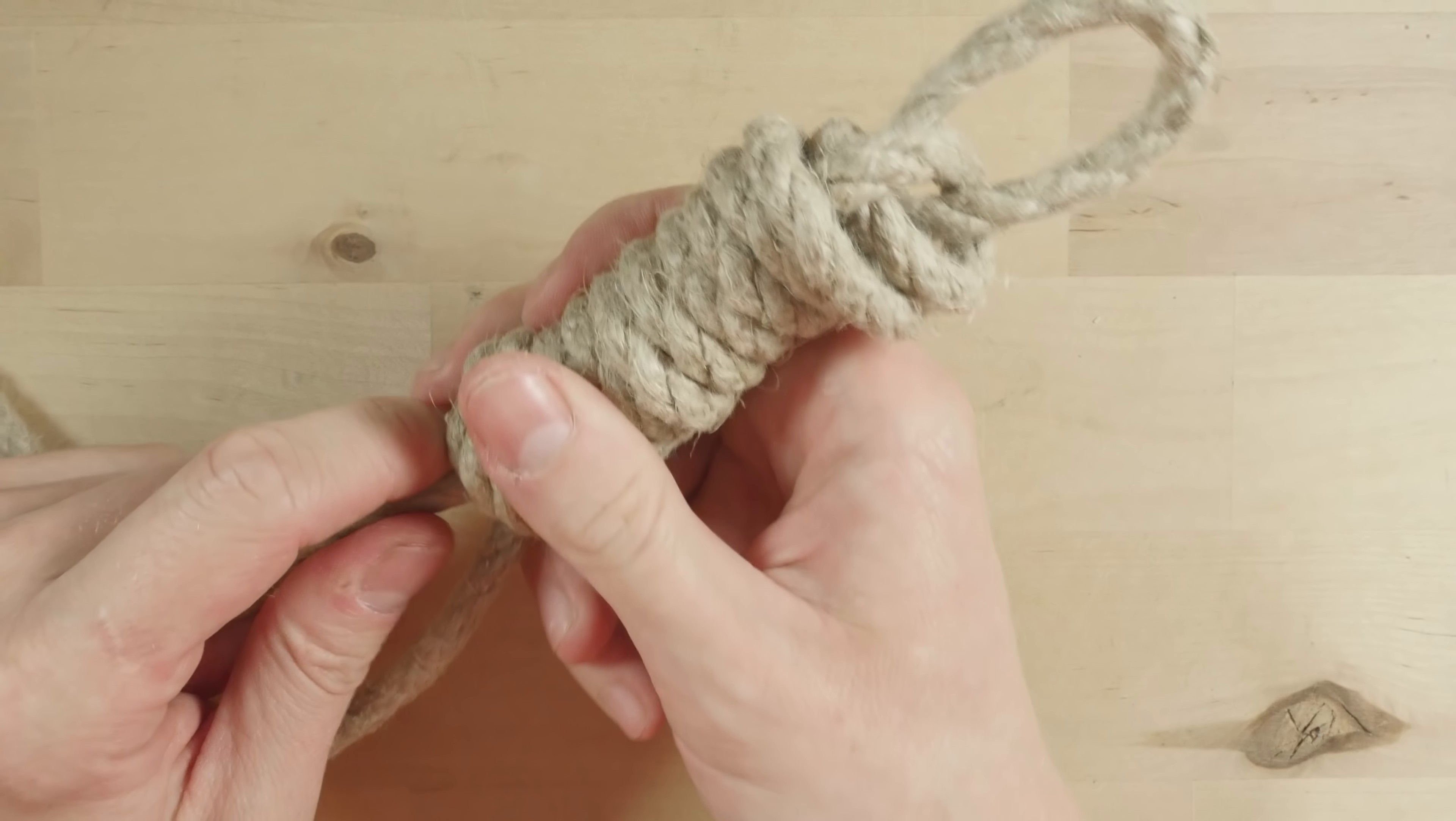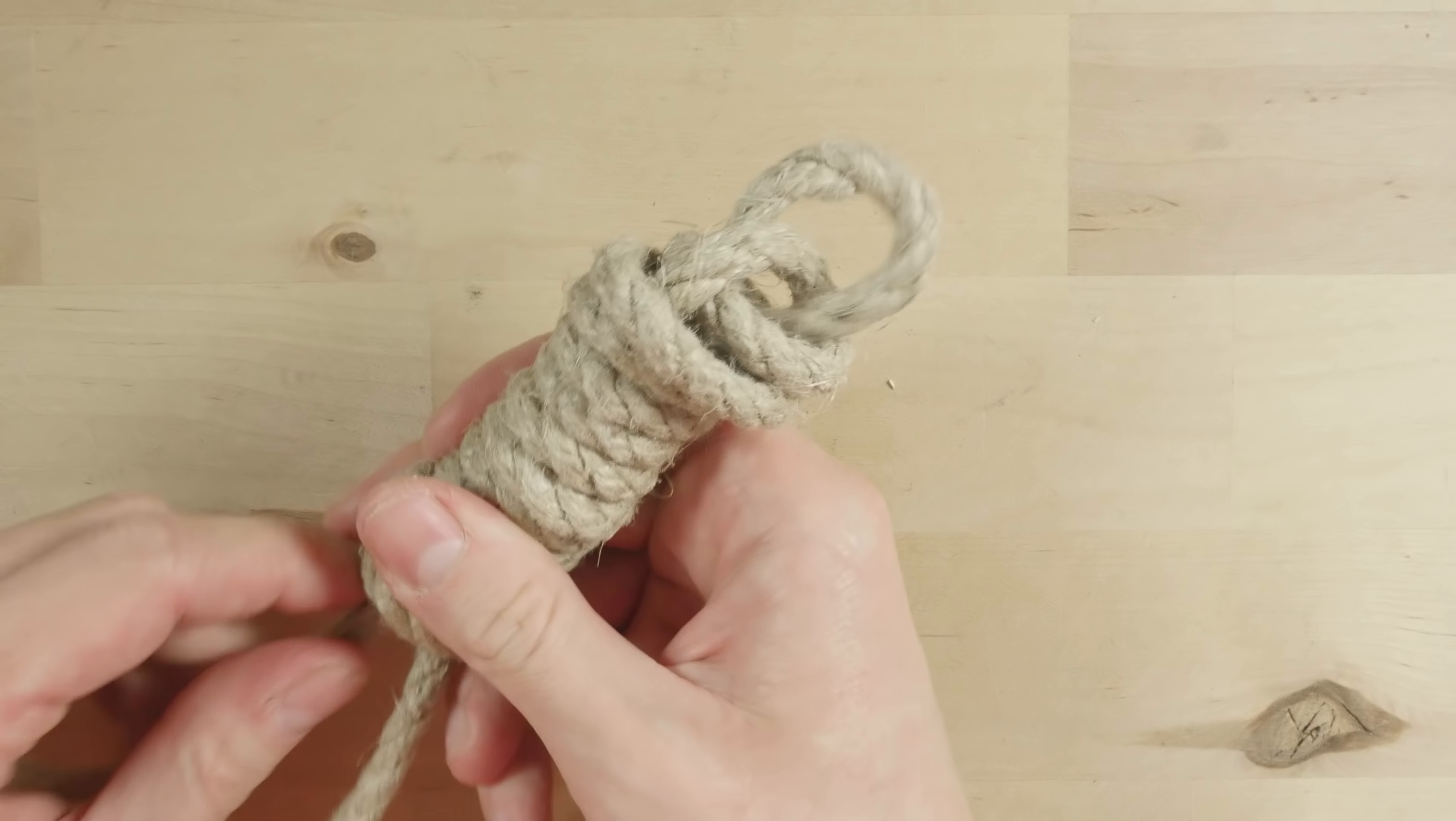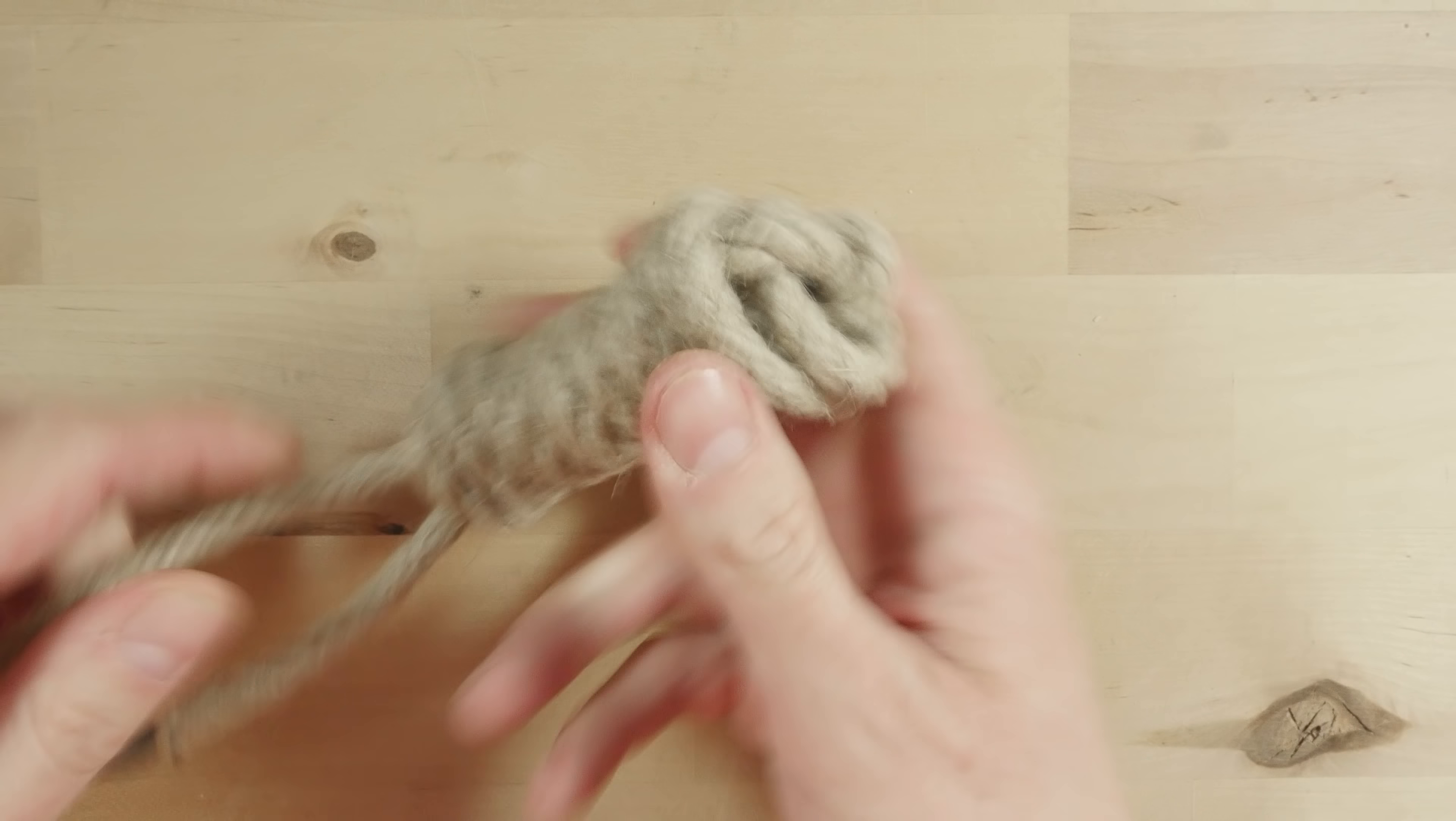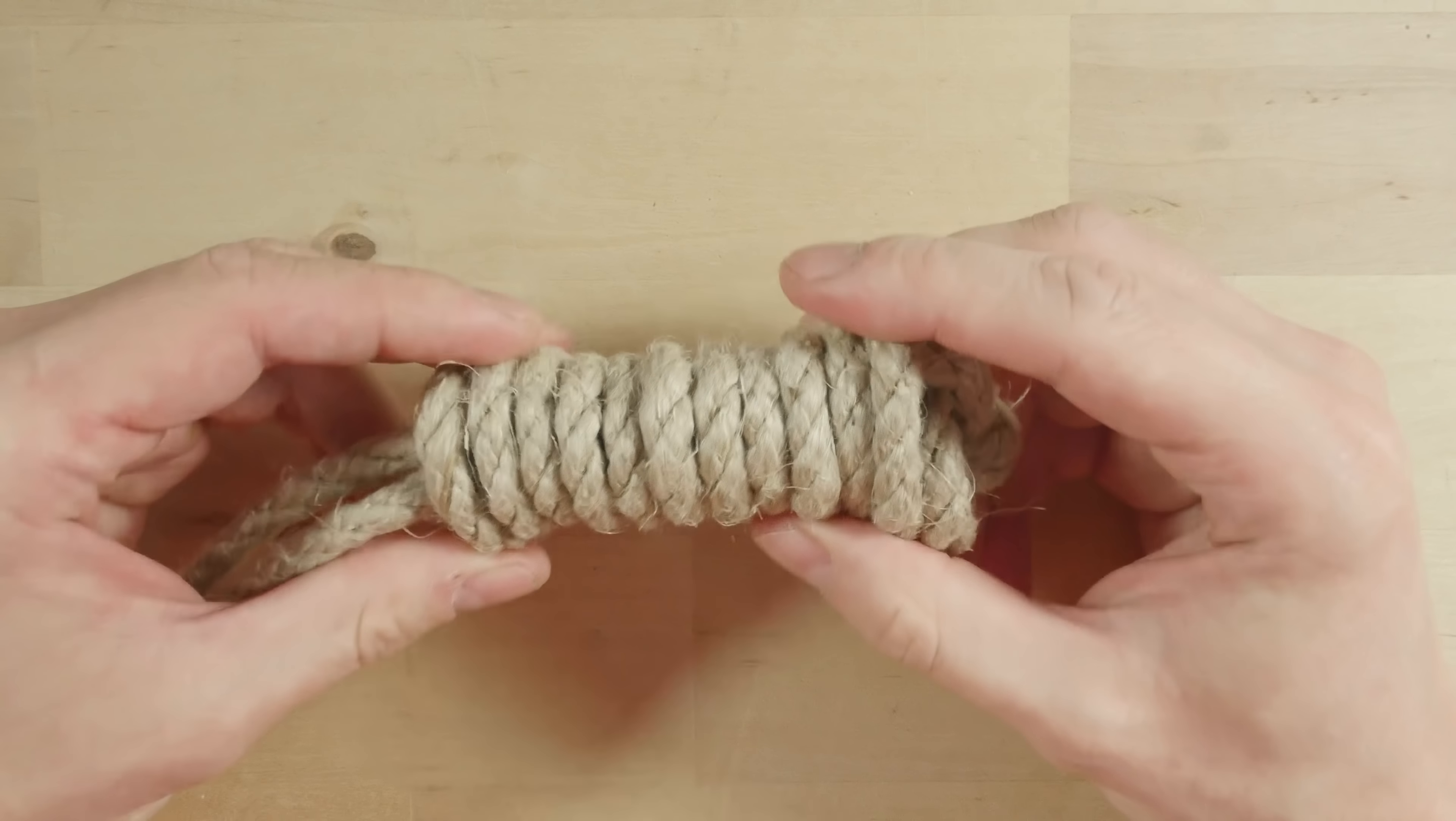Then pull the slack out, like this. And this is the heaving line knot.